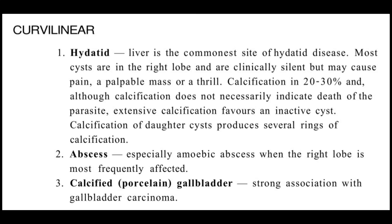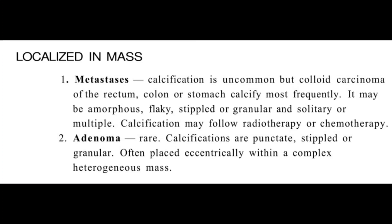Another important entity is the calcified gallbladder, called porcelain gallbladder. The wall of the gallbladder gets calcified, and as a result you won't be able to see the gallbladder clearly, but the long curvilinear calcification will suggest porcelain gallbladder. This has a strong association with carcinoma, so whenever you come across a calcified gallbladder wall, always advise further imaging and workup for any suspicion of carcinoma.